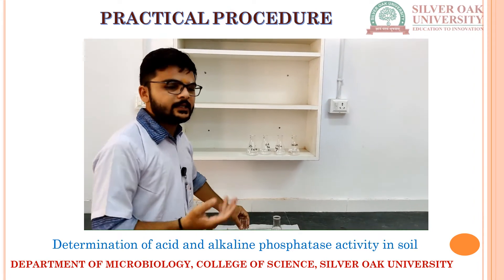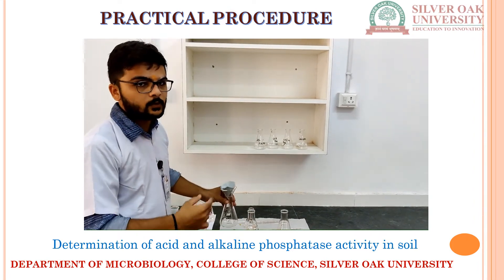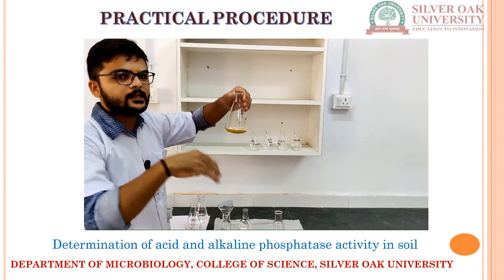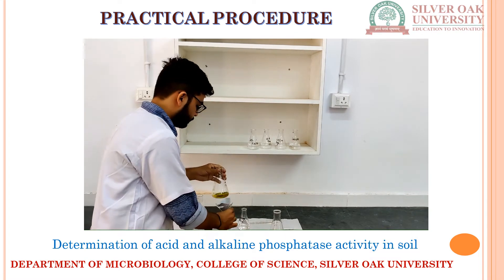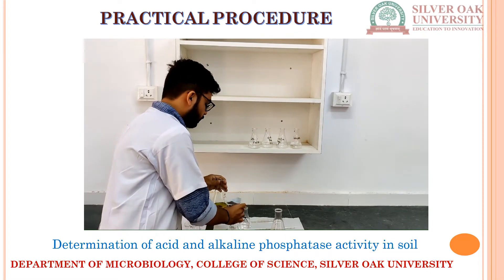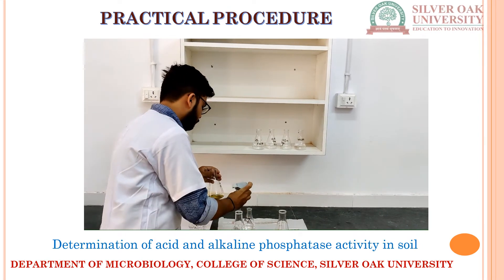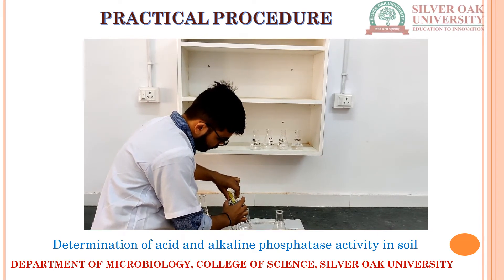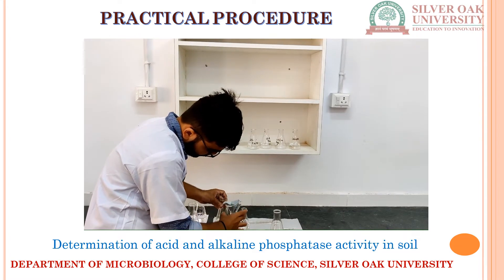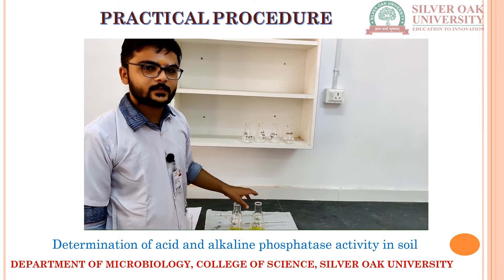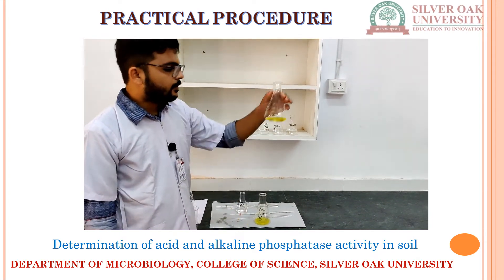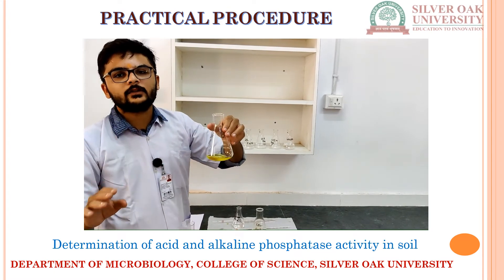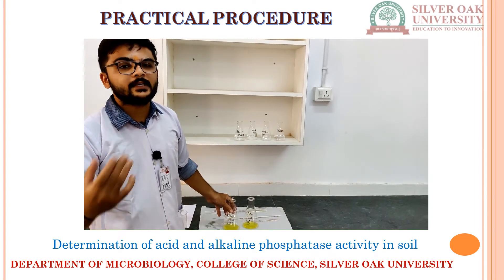Just as you add NaOH, the whole solution will turn yellow in color. After this, we have to filter the whole system through filter paper so that the excess soil particles can be removed and the remaining solution can be studied under the spectrophotometer. For filtering, you take a wet filter paper in your funnel and filter the whole suspension into a flask. After filtration, we will get a yellow colored filtrate.